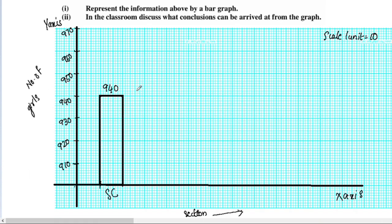The next section is Scheduled Tribe (ST) with a value of 980. We also have values of 940, 960, 930, and 970 for the remaining sections.